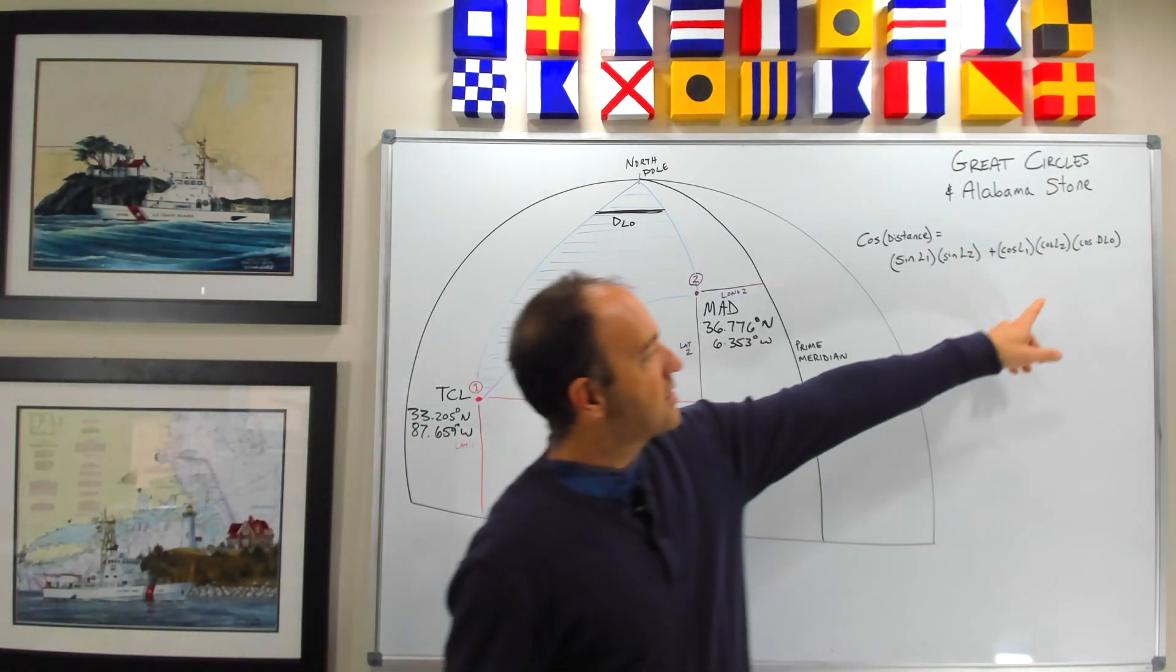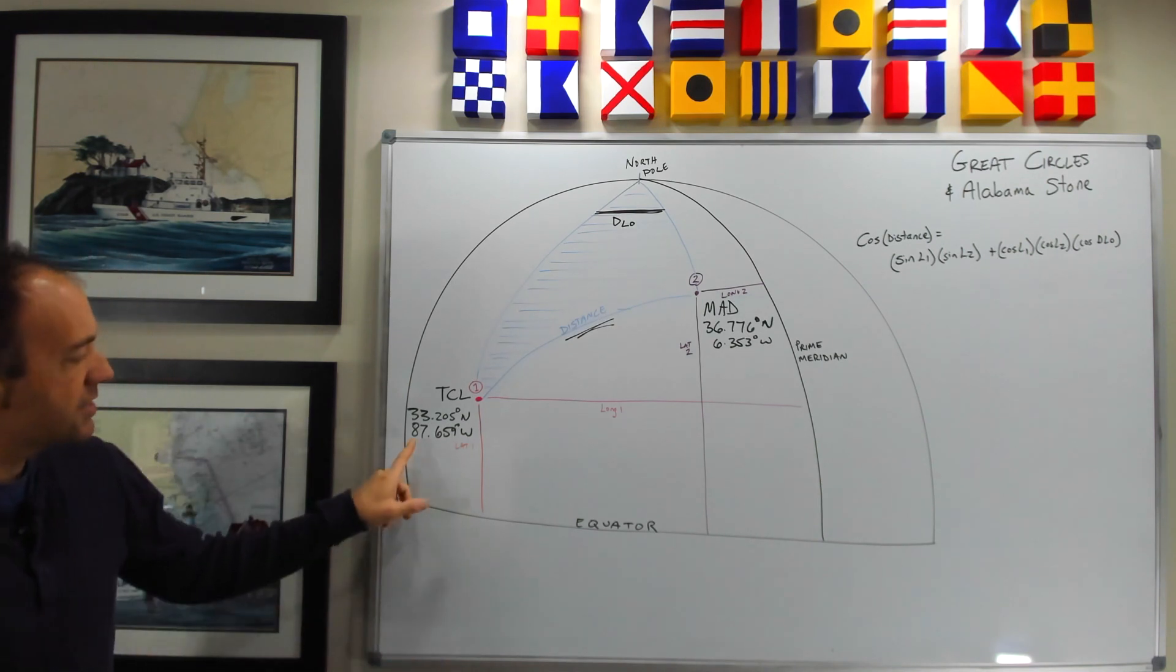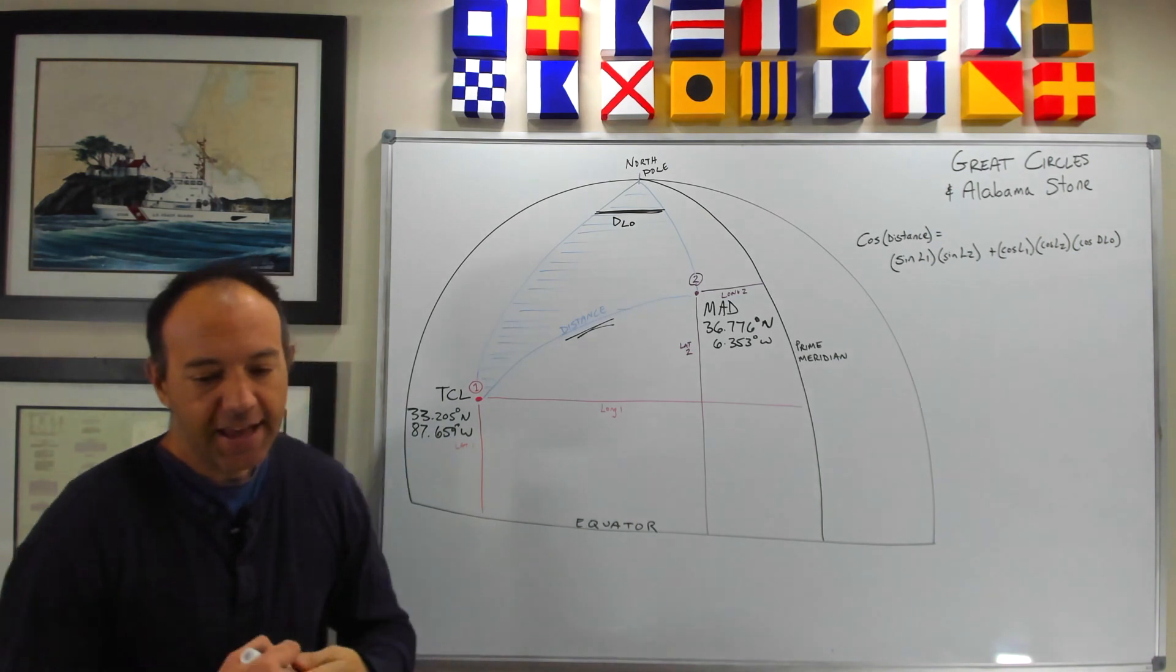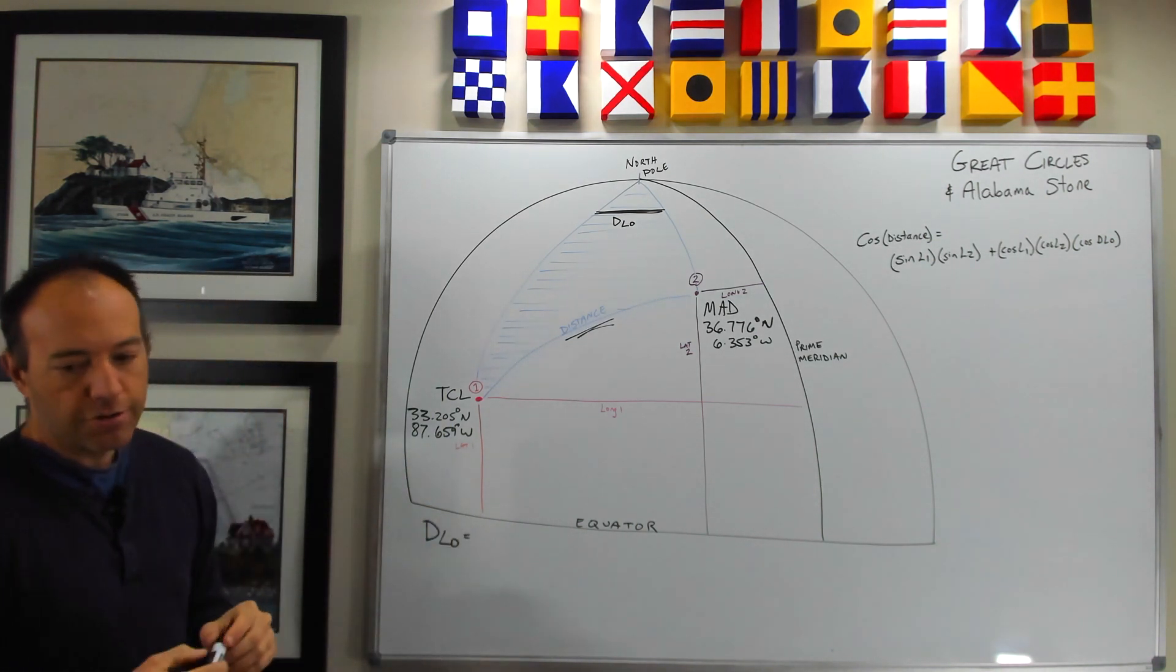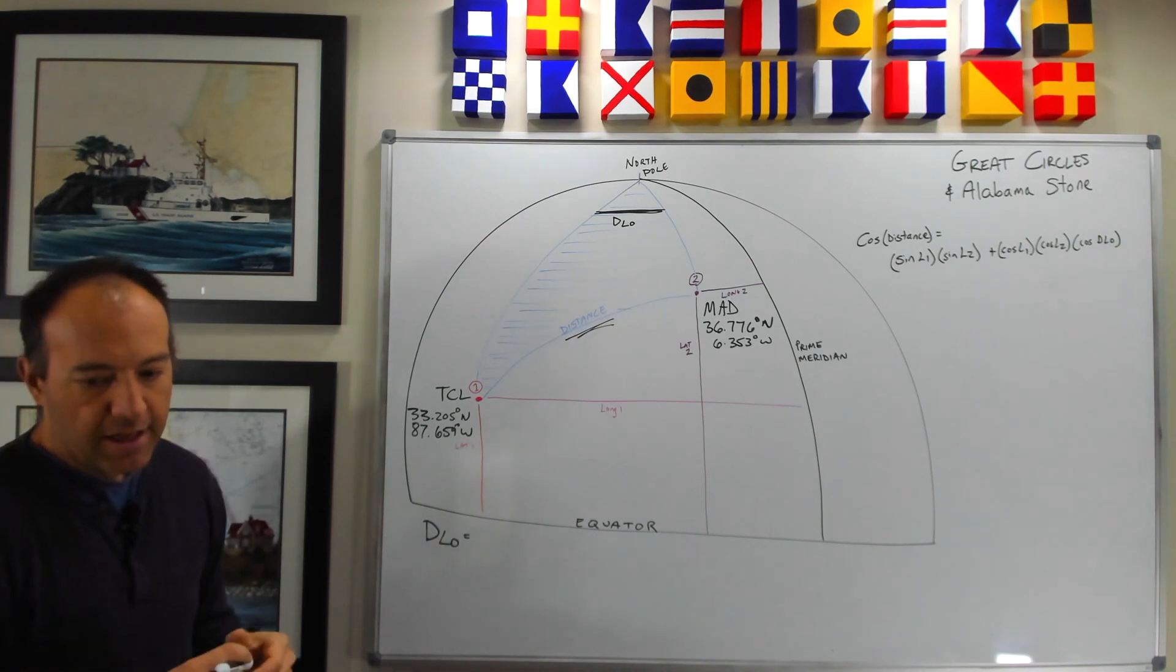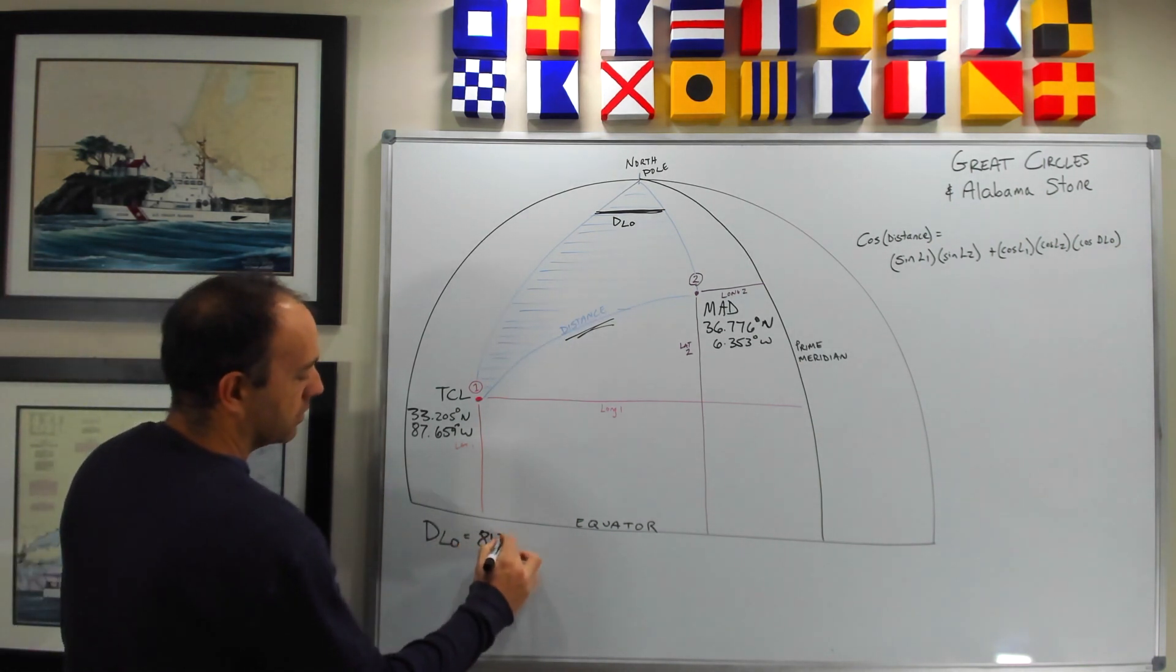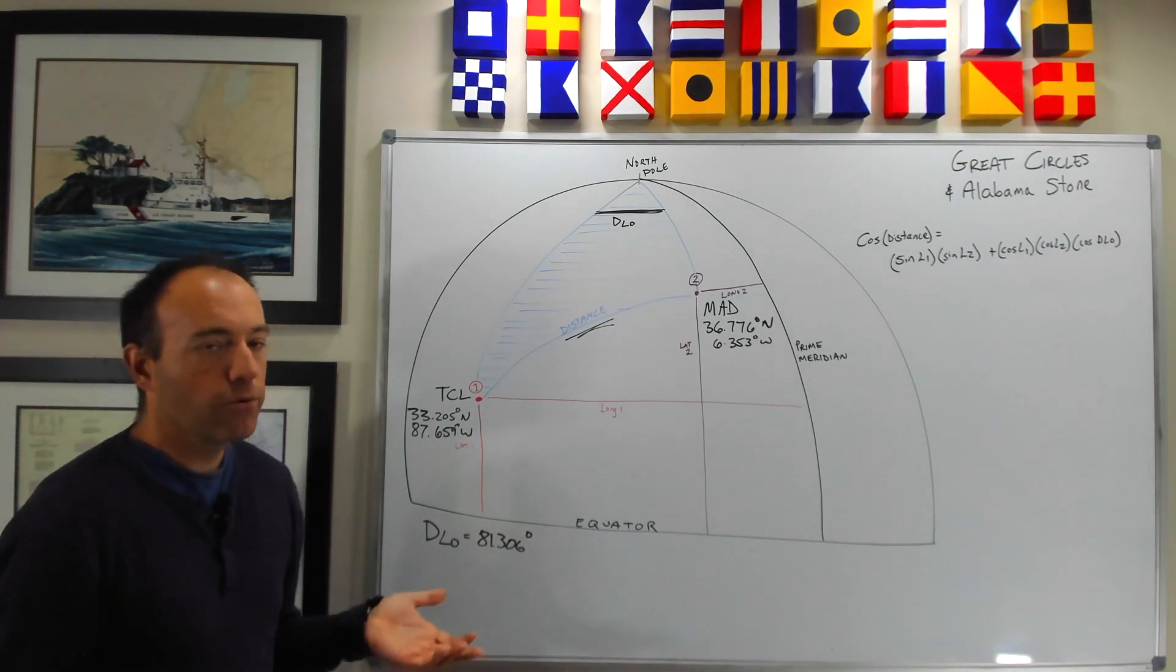Very important to know this d-low, this difference in longitude, is really just the difference between 87.659 and 6.353. And that difference in longitude, if you just do that math out, is going to be 81.306 degrees. And so you should have everything that you need to plug into the formula.